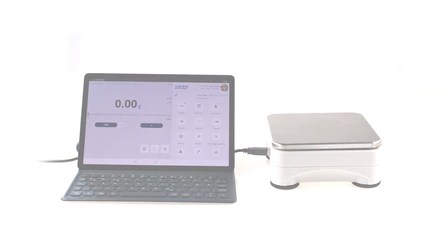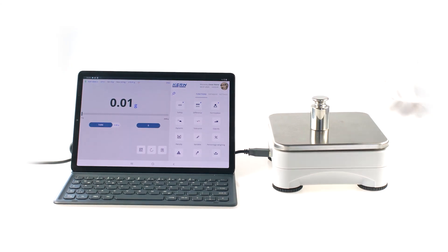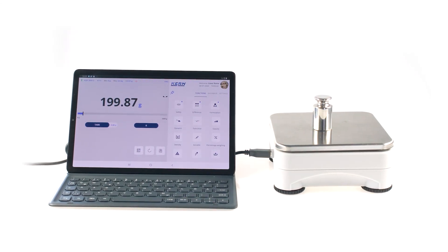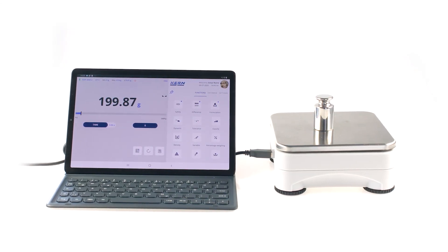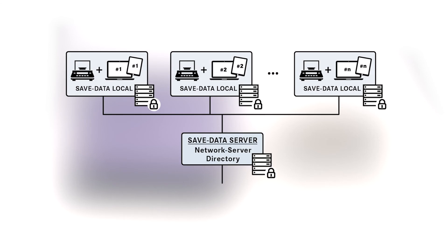Easy Touch combines the performance of Kern Scales with the flexibility of a Windows or Android environment. The central storage location of all weighing values from different users in an Easy Touch network is the basis for data exchange of weighing or counting results with an ERP system or any other third-party system that processes these data.